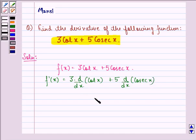Now we know that d/dx of cot x is equal to minus cosecant squared x.